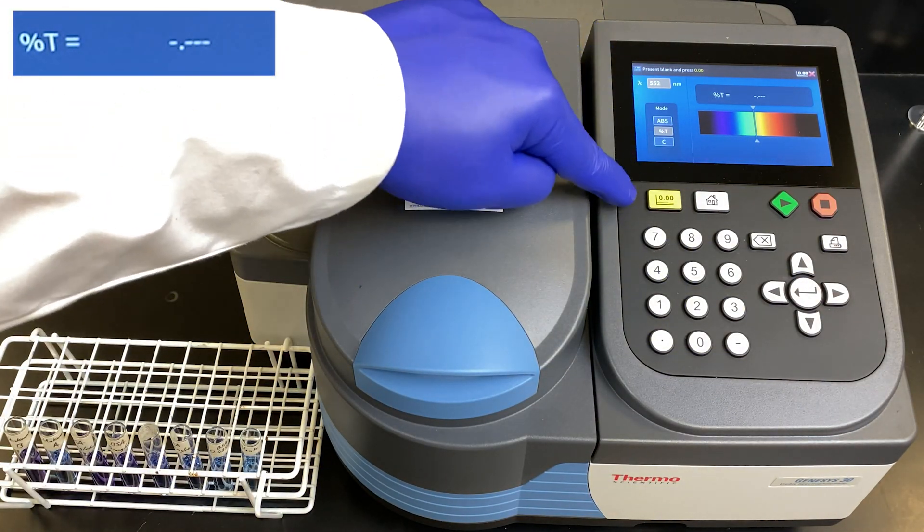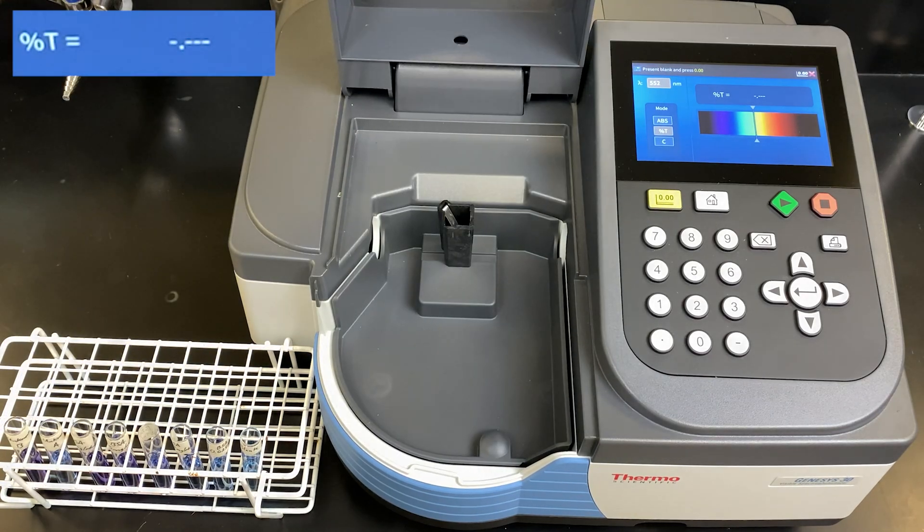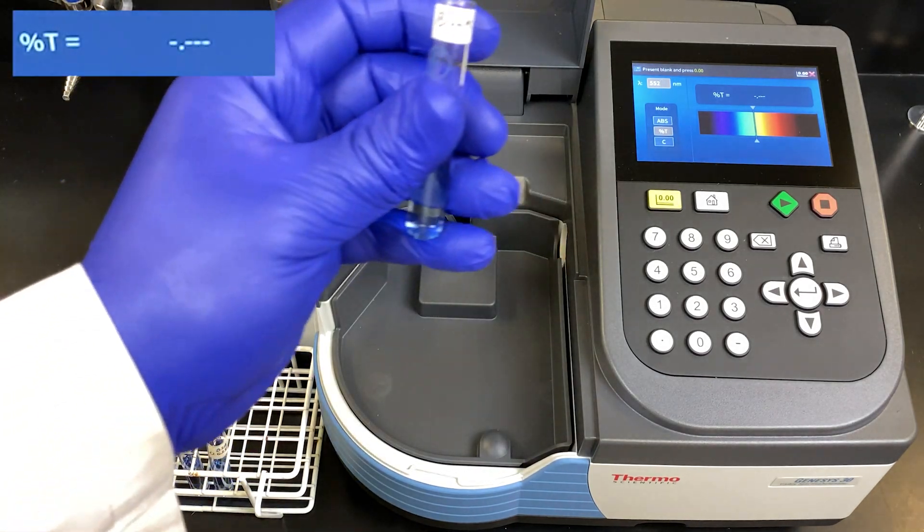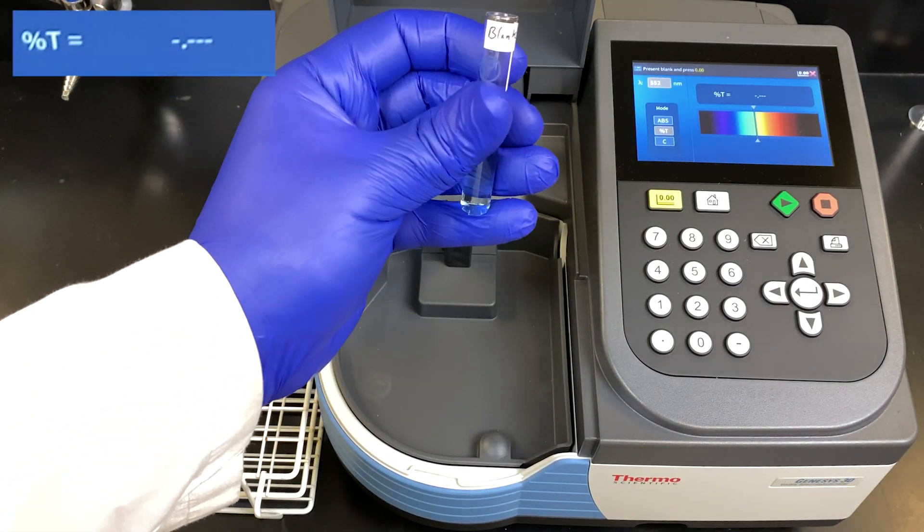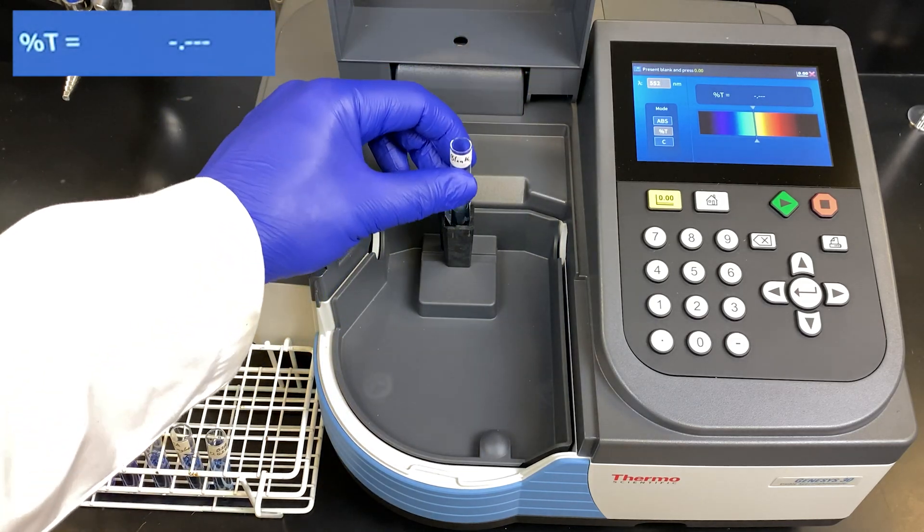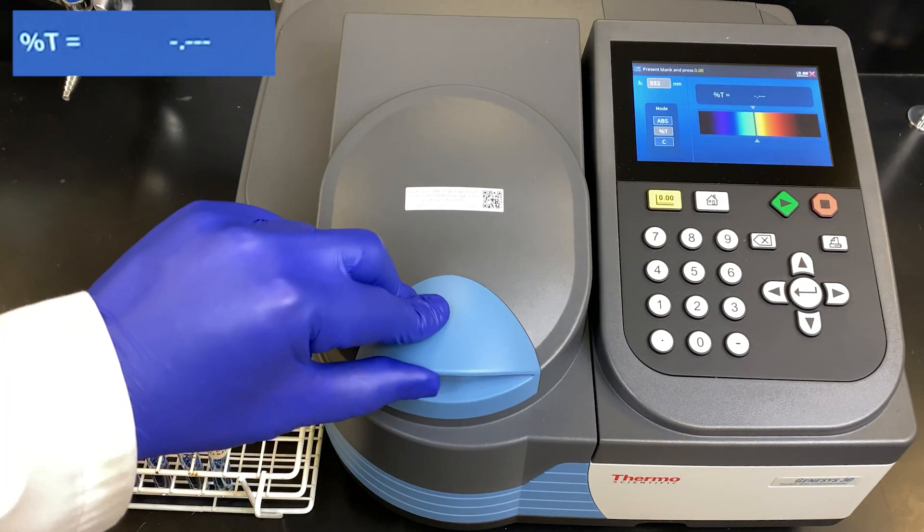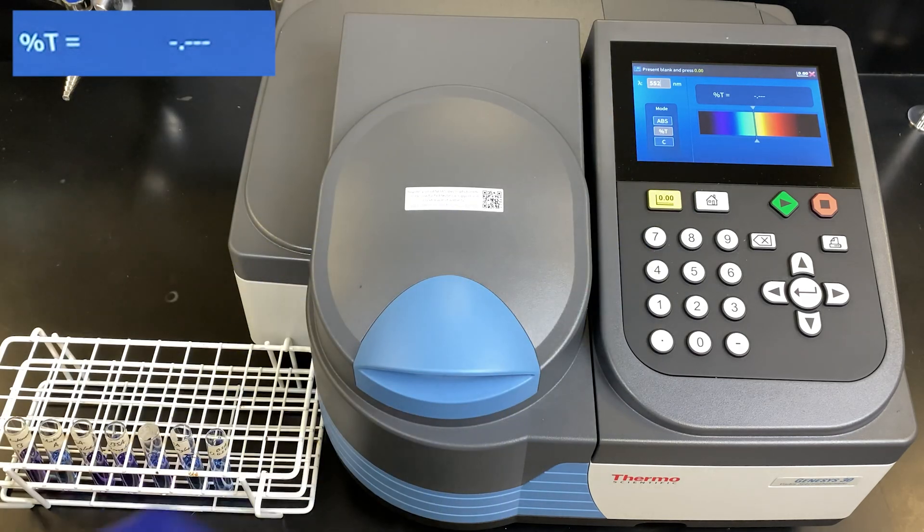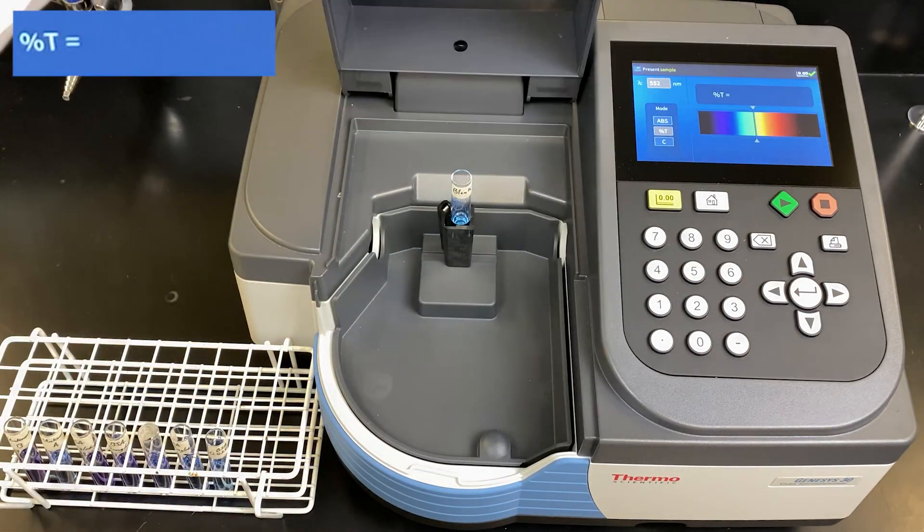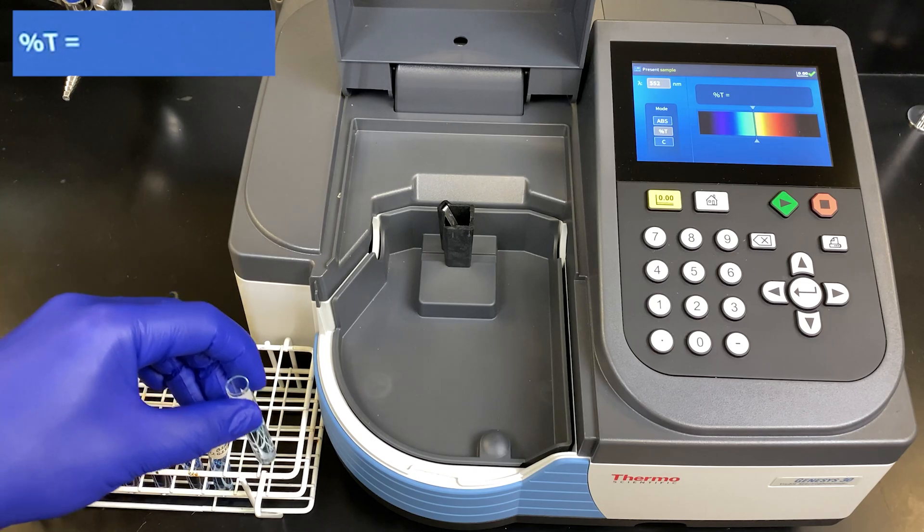We must now blank it. Here we're going to use our blank, which is the Biuret reagent with just water. Test tube. Place it inside. And press the yellow blank button. It now blanks the sample. This would be 100% transmittance.